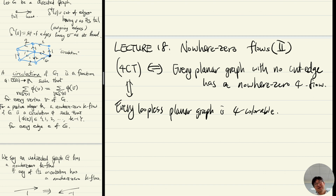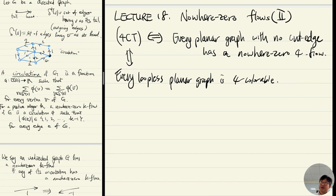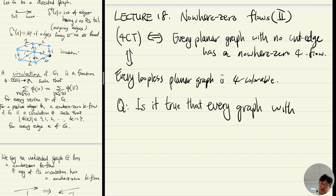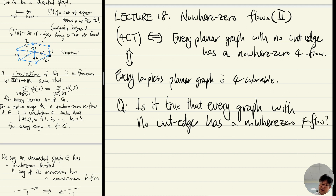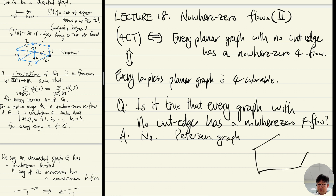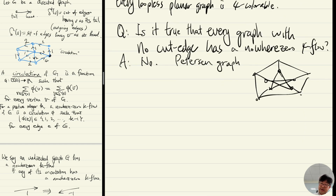You may ask: is it true that every graph with no cut edge has a nowhere-zero 4-flow? The answer is actually no. You will see from the homework that the Petersen graph is a counterexample. The Petersen graph is a 10-vertex graph that appears many times in graph theory.